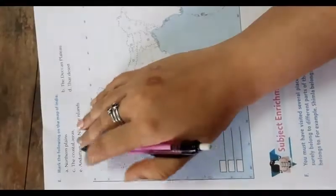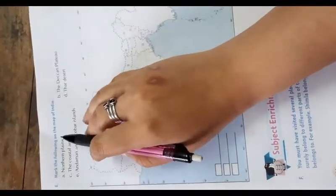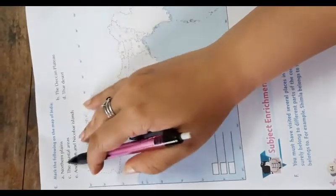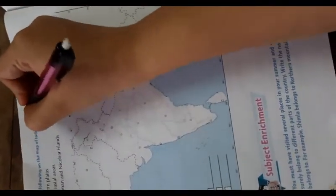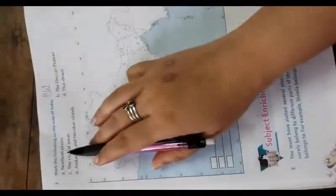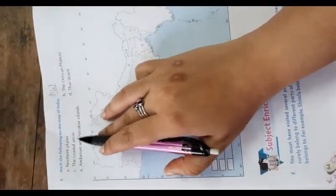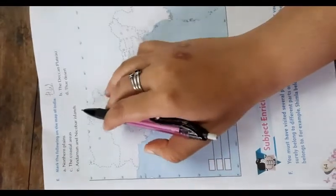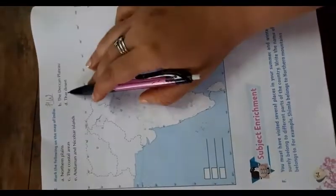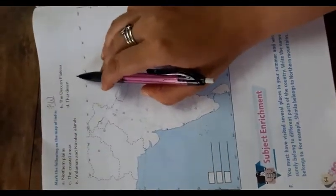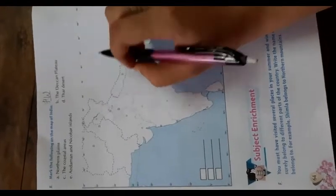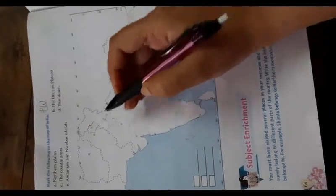Now come to the page number 64 and the question number E. Mark the following on the map of India. So here you have, and this is your homework, and you have to do this. In this map you have to mark the northern plains, the coastal areas, Andaman and Nicobar Island, and the Deccan Plateau, and the Thar Desert with help of your parents. And write the answer with your pencil.